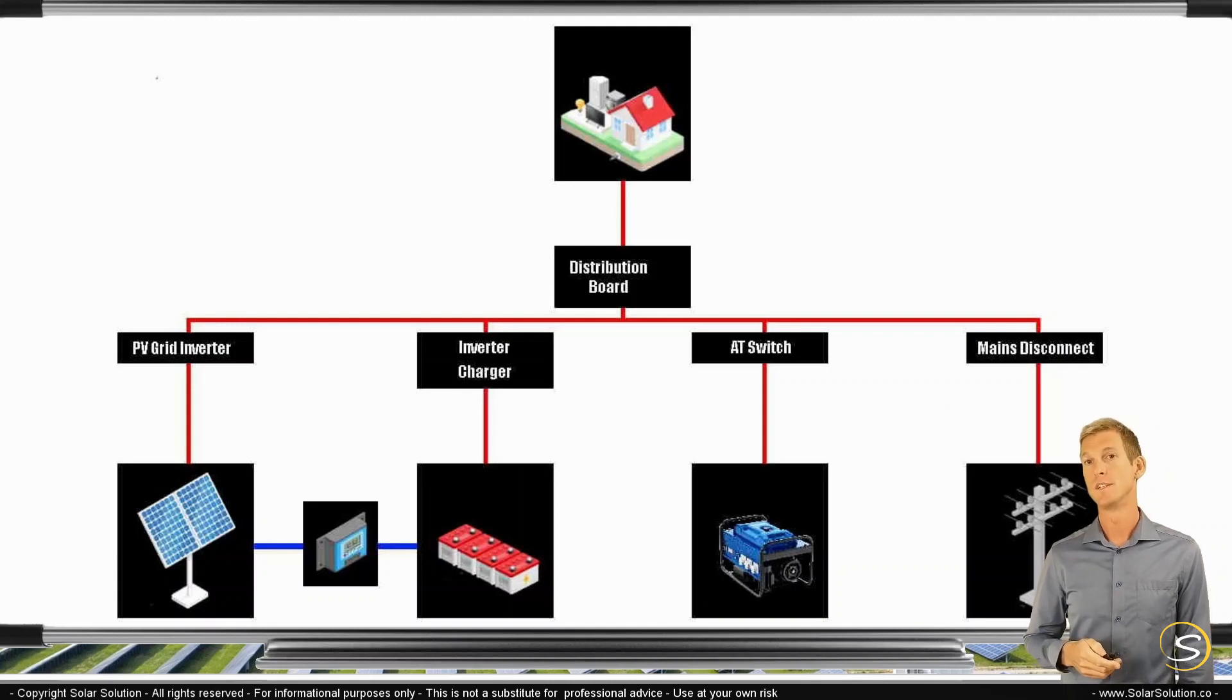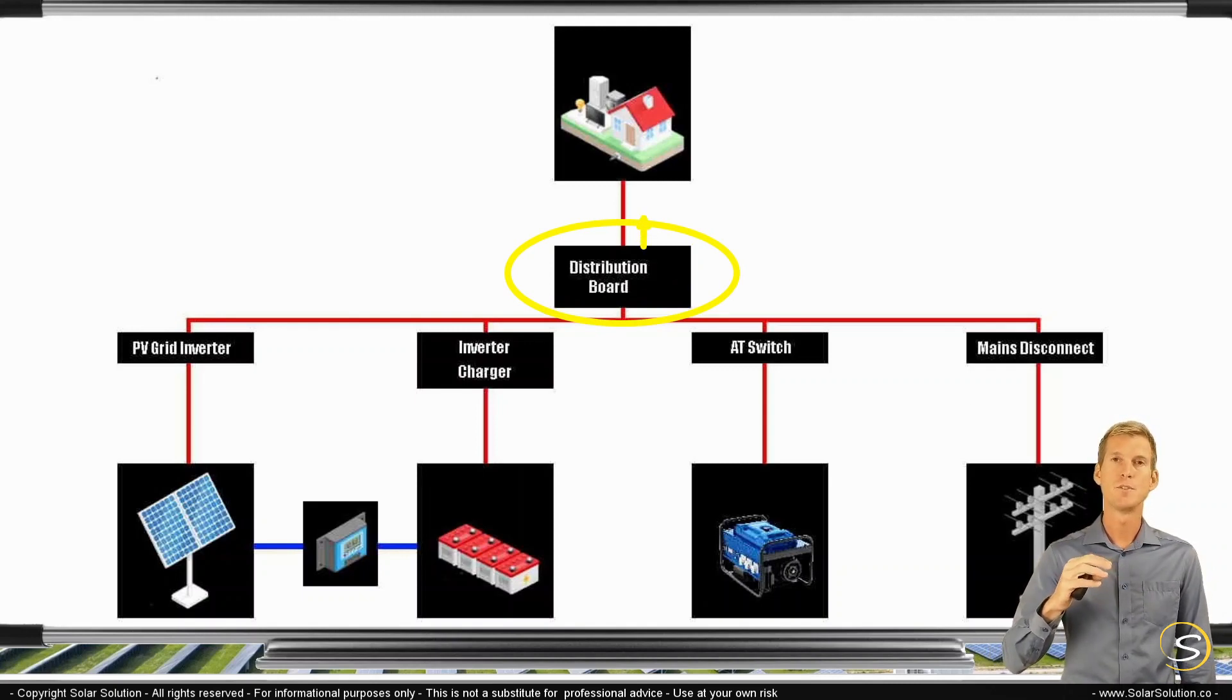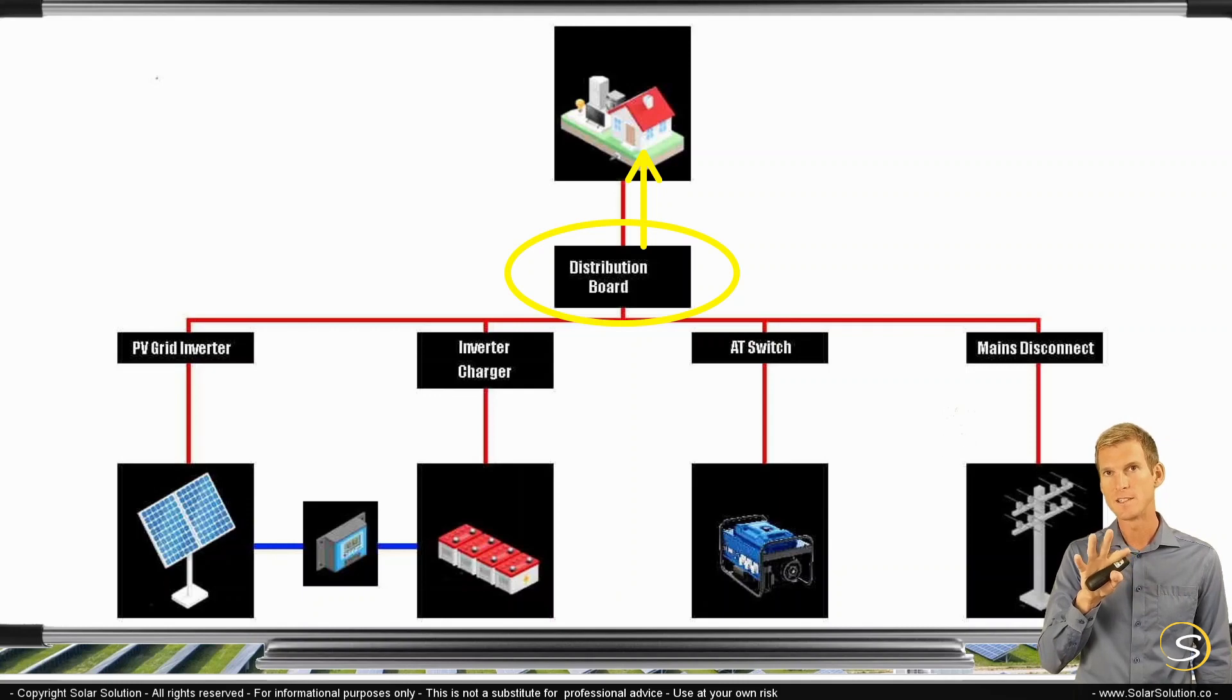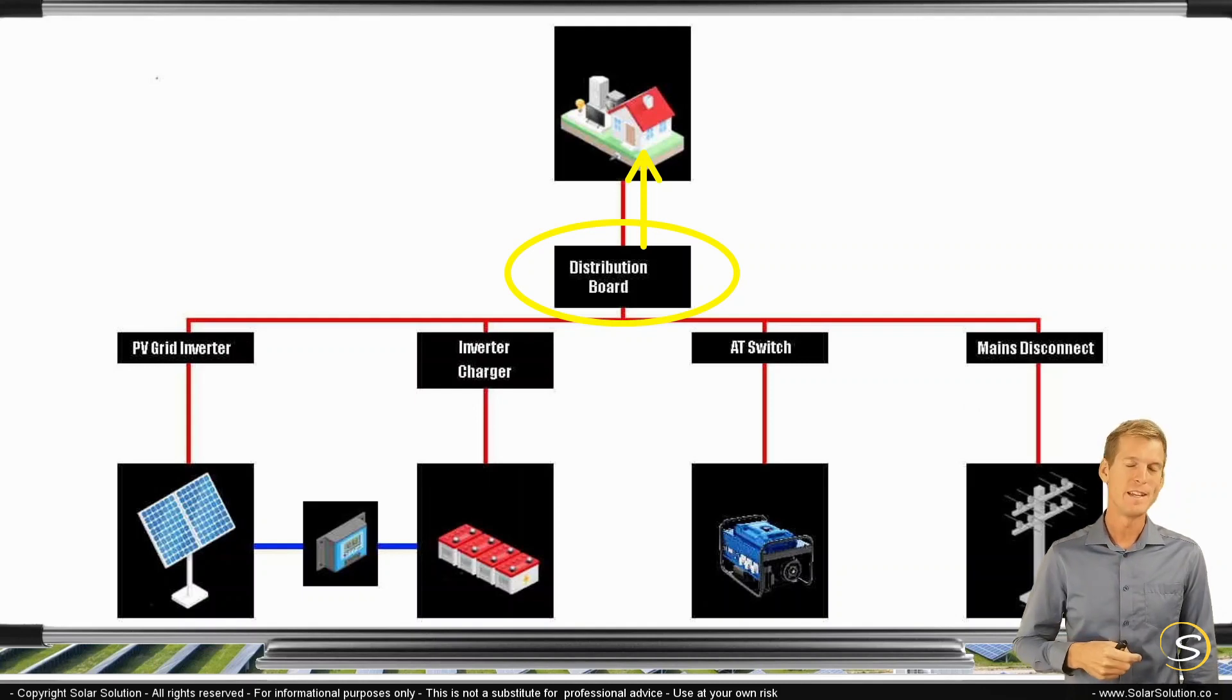Then we have your distribution board. So your distribution board takes the main AC power from your local AC grid and then safely distributes it through your house. So it normally takes one AC in and then splits it up into many different AC groups. You can have your group for your lights, your group for your stovetop, your group for your heating system, etc. So that's what your distribution board does.